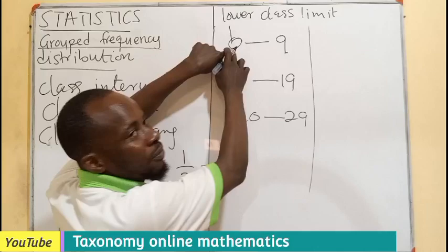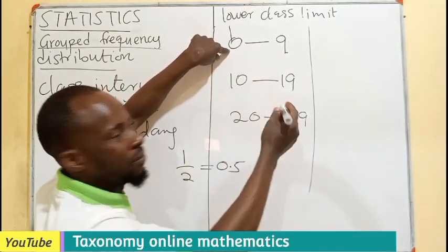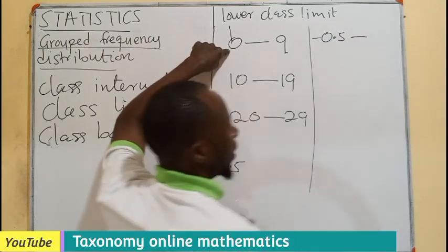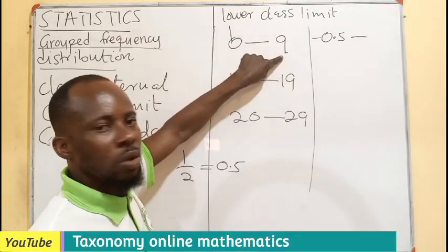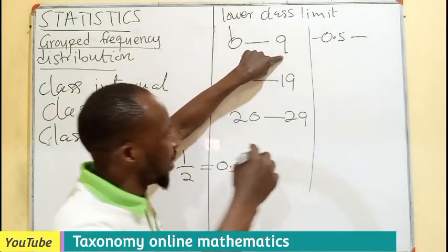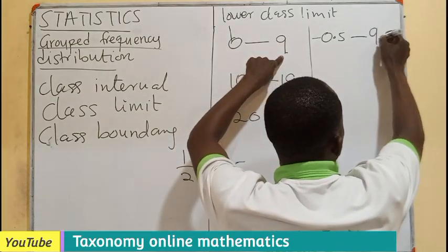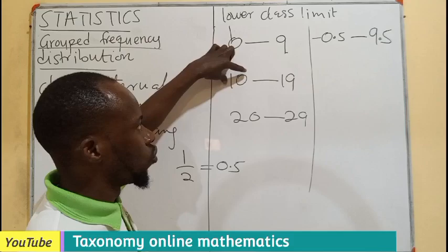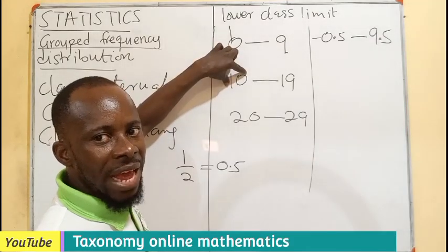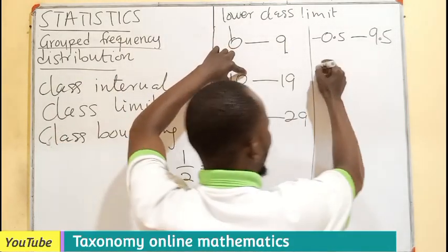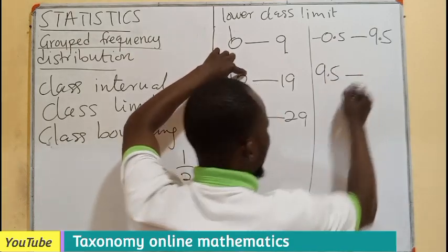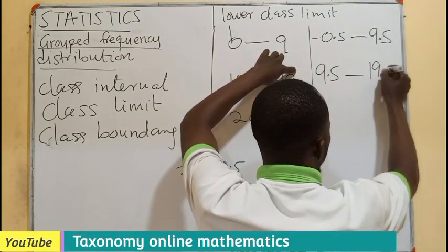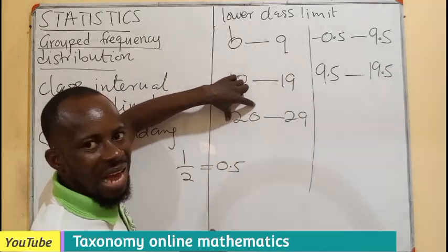If I subtract 0.5 from 0, it will be negative 0.5. Then adding 0.5 to 9 gives 9.5. Similarly, 10 minus 0.5 gives 9.5, and adding 0.5 to 19 gives 19.5.